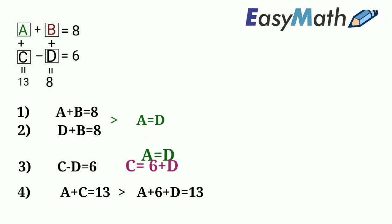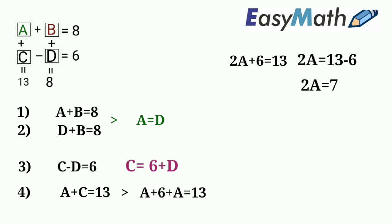Using the result A is equal to D in this equation, we will get a new equation A plus 6 plus A is equal to 13, that is 2A plus 6 is equal to 13, and here we will get the final value of A that is equal to 3.5.